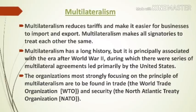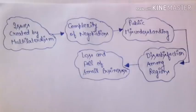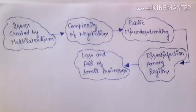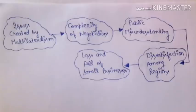Now let's discuss the issues created by multilateralism. There are four important issues: the first is complexity of negotiations; the second is public misunderstanding; the third is dissatisfaction among regions; and the fourth is loss and fall of small businesses. These are the four main headings you need to remember.